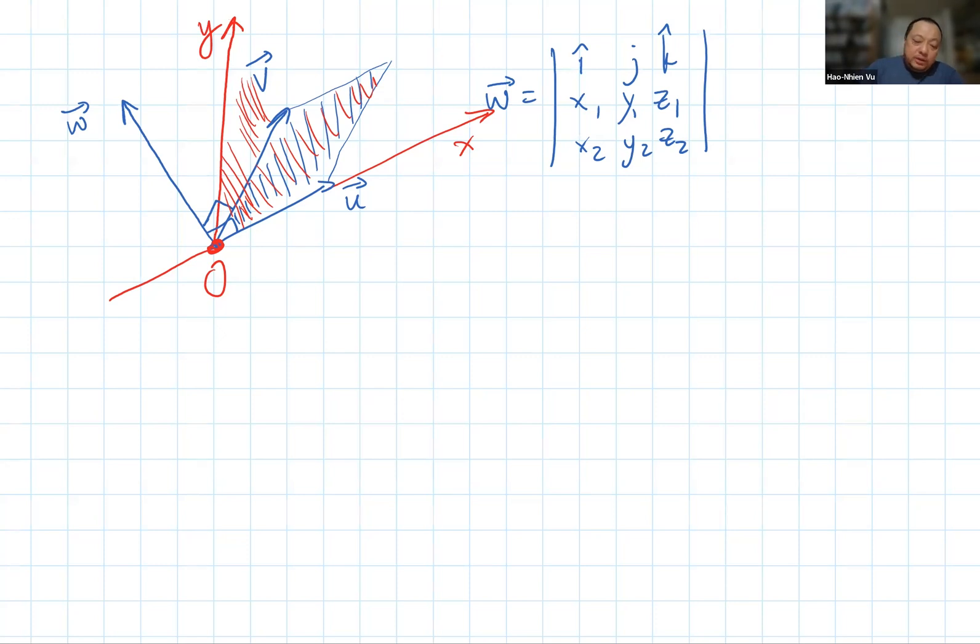Once I have defined my axis that way, I can redraw the picture in the new x, y plane. Here's my x-axis. Here's my y-axis. My vector u is going to be here because that's how I defined the x-axis. V is somewhere on the same plane because that's how I defined it. And w will be sticking out of the page looking at us. And w is u cross v.